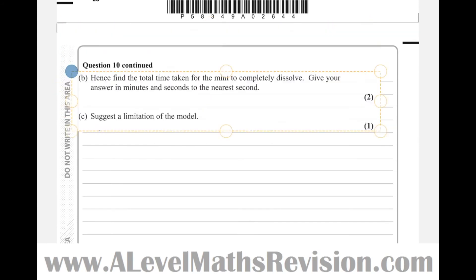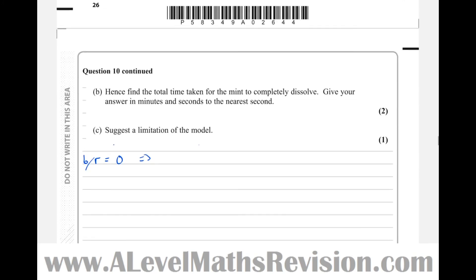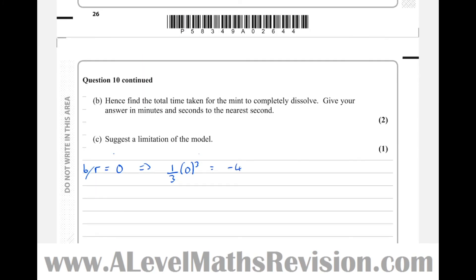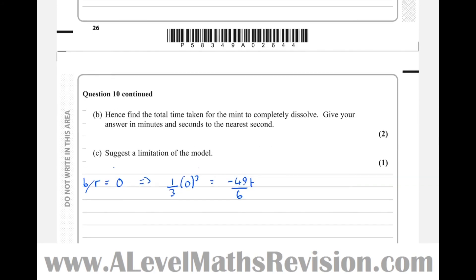So the next part of the question, I'll just paste it here to remind us what it was. It said, hence find the total time taken for the mint to completely dissolve, i.e. the time taken for it to have radius equal to 0. So this is part b, which means that, and using the equation there.